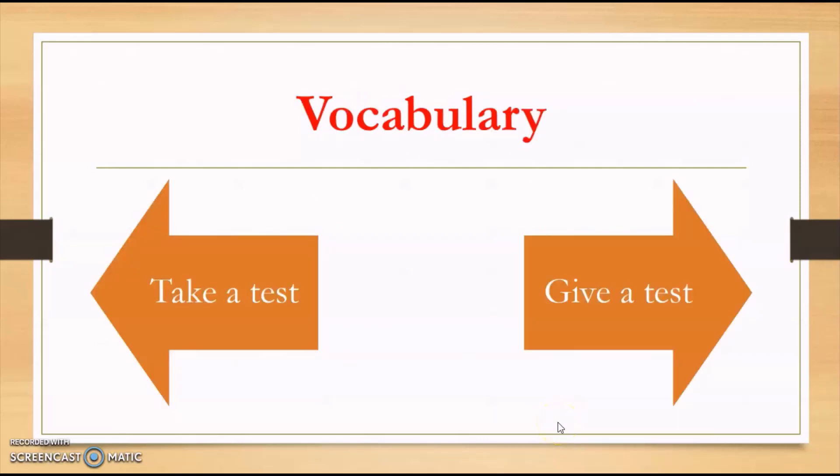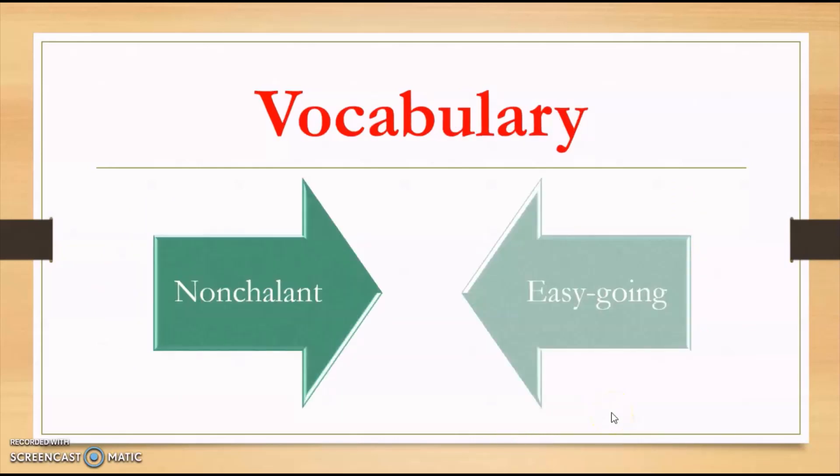Again for five point questions your vocabulary is tested. For example, you should know the difference between take a test and give a test. Take a test means you're an examinee and you're sitting an exam, whereas give a test means you are an examiner and you're giving someone an exam. So this difference should be clear to you. Similarly, there is another word like nonchalant. Nonchalant means easygoing. He pretends to be nonchalant but we could see he was nervous. You must know what nonchalant means: calm or easygoing or composed.